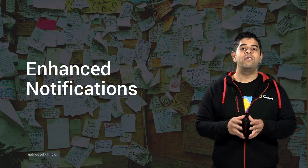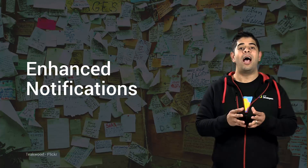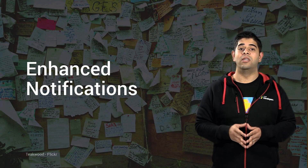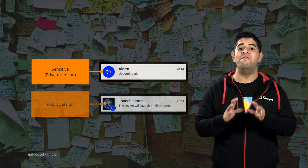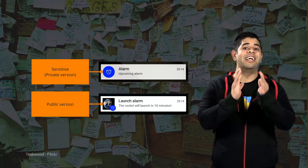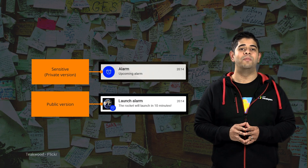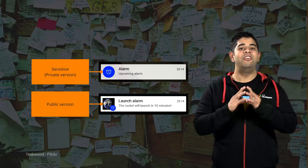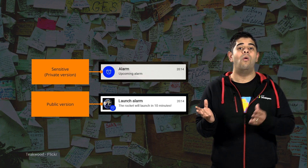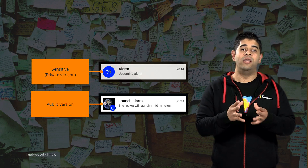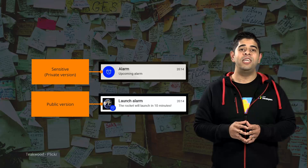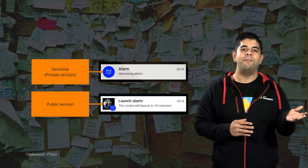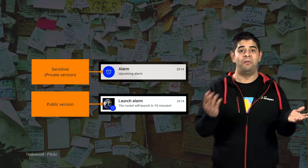The lock screen lets you surface content, updates, and actions to users at a glance without needing them to unlock their device. The notification APIs provide visibility controls to let you declare the sensitivity of information displayed on your notifications. This is particularly important, as users can choose to show or hide sensitive content on their lock screen. Instant messaging apps should declare their notification content to be private, whilst media playback apps should declare this to be public.